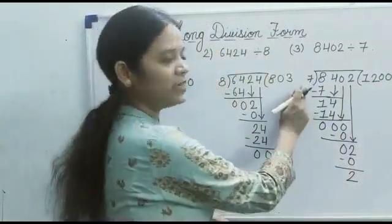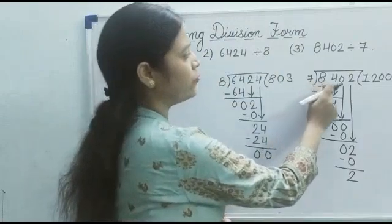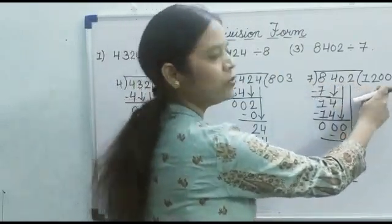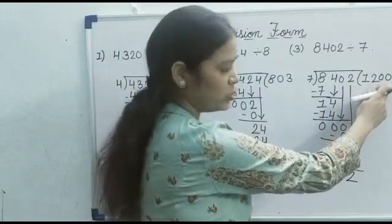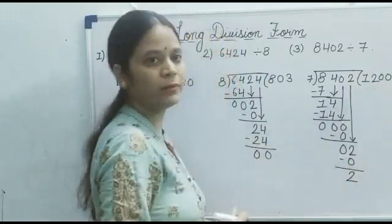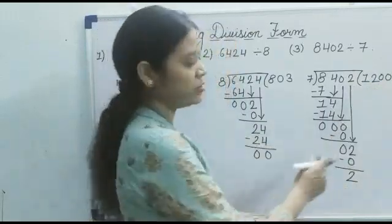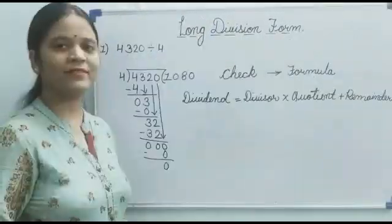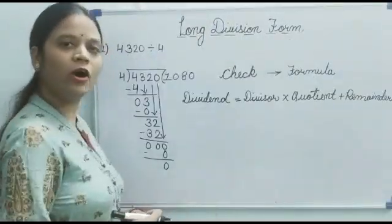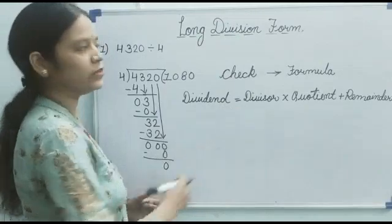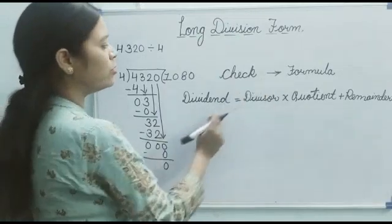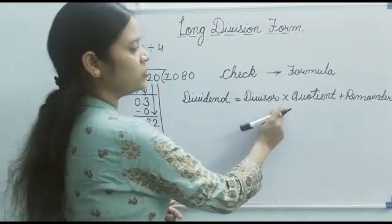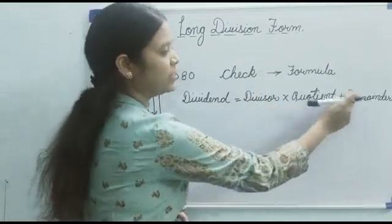So here 7 is the divisor, 8402 is the dividend, 1200 is the quotient, and 2 is the remainder. This is the example of long division form. Now I am telling you how we can check our answer. The formula for this is: dividend equals divisor multiplied by quotient plus remainder.